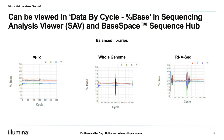When we select the percent base metric in our data-by-cycle chart, it will show the proportion of each nucleotide per cycle throughout the sequencing run. We have the cycle number along the x-axis at the bottom, with the percent base along the y-axis, with individual lines for each base. In this slide, we have representative percent base charts for three different examples of diverse and well-balanced libraries, such as Phi-X, whole genome samples, and an RNA-seq library. In all of these, each nucleotide is present in roughly the same proportion, all around 25%.